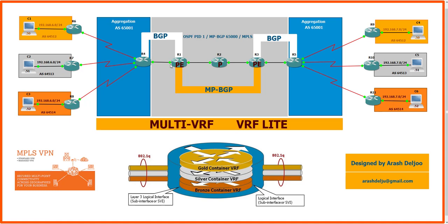In this scenario, we have a provider with three routers: R1, R2, and R3. R1, R2, and R3 are all PE routers. We also have one aggregation layer, where instead of a switch, we have a router — for example, R4 and R5.